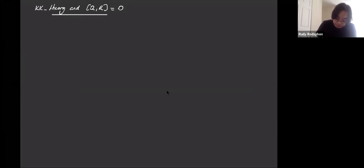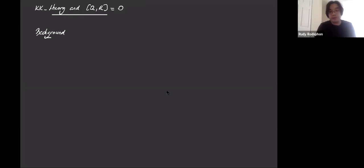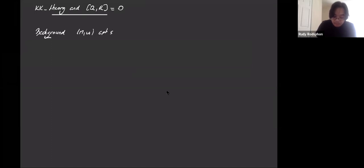So here's the background. We start from some compact symplectic manifold, and let's say it's acted on by some compact Lie group G. Let's say also the action is Hamiltonian for now. Just to remind you what it means: you have a moment map, let's call it mu, and it goes from M to G star.